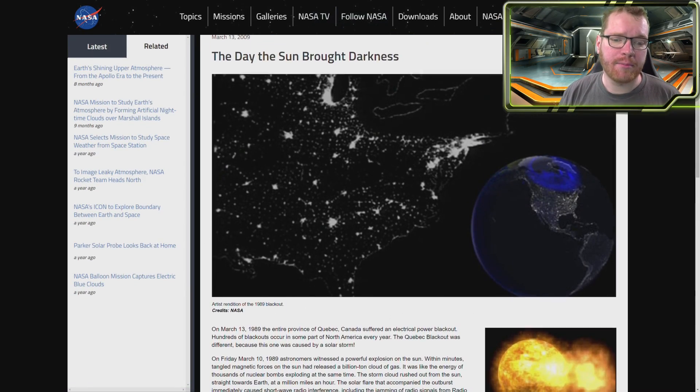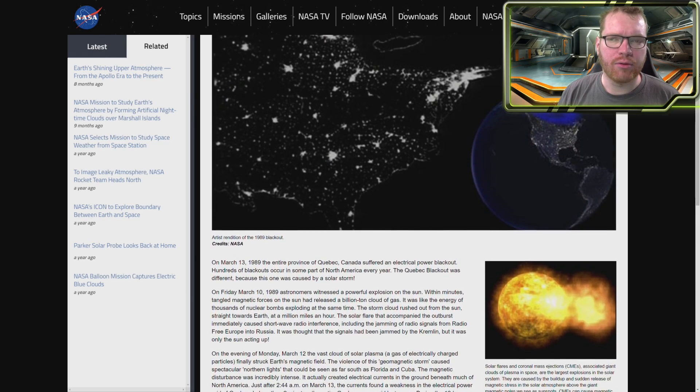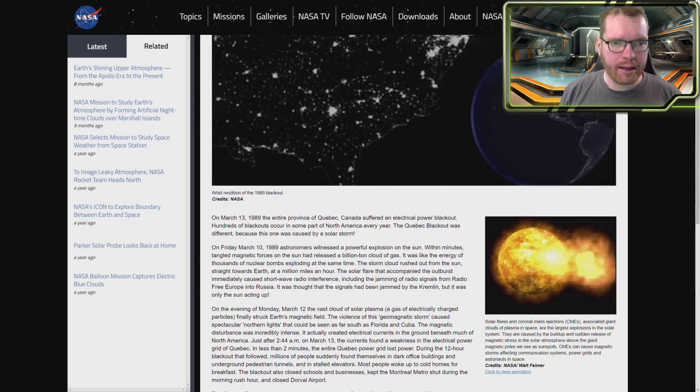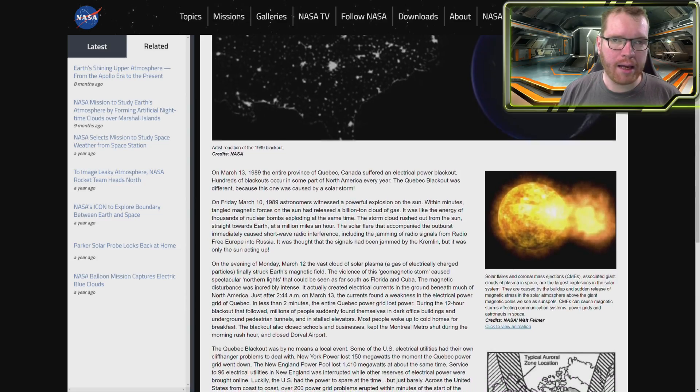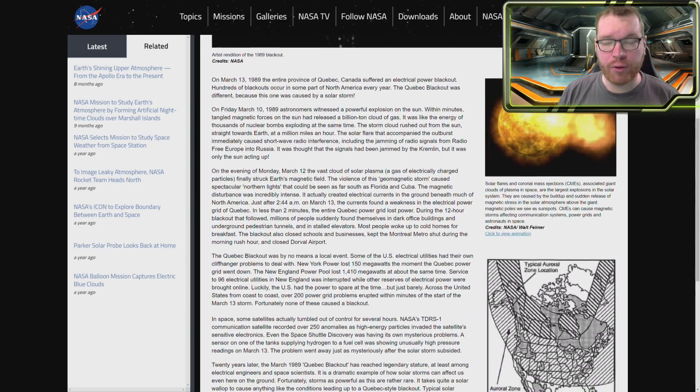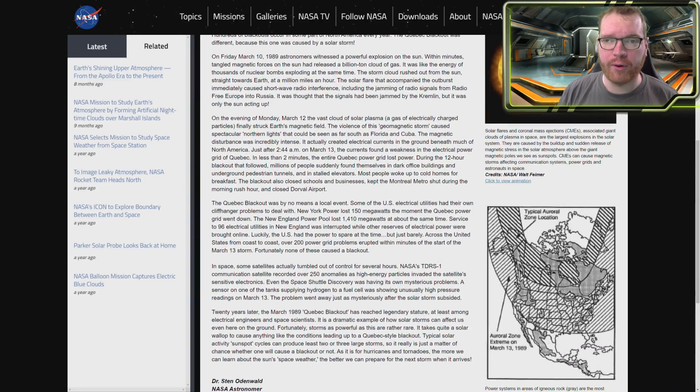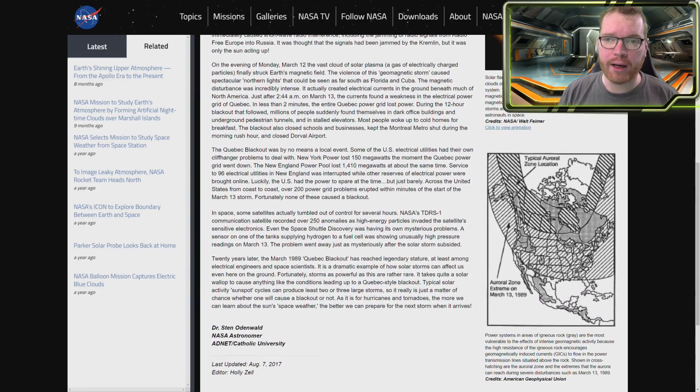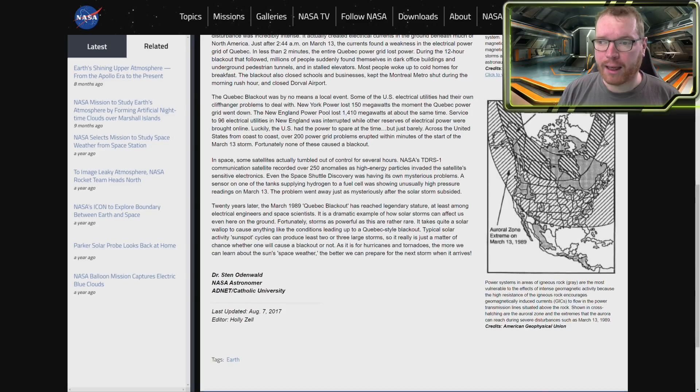As a good example, that's back from March 1989, so quite a bit of time back, but back then, the Earth was hit by quite a severe magnetic storm. Canada took the brunt of the blow, tripping a circuit breaker at one of the power plants close to Quebec, causing a nine-hour blackout.